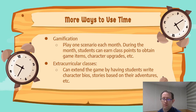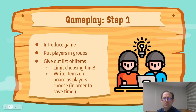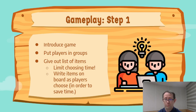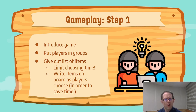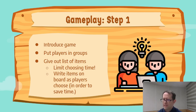Alright, so now it's time to play your game with your students. First, give a brief introduction to the game. Next, place your students into groups. Give them a list of the items and have them choose which ones they want for their team. Only give them about 5 to 10 minutes for this, or they'll take forever. As they choose, record each team's selections on the board so you and everyone else can keep track.